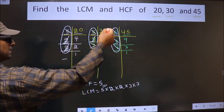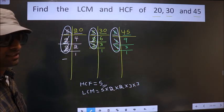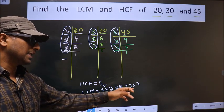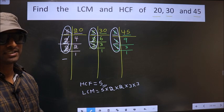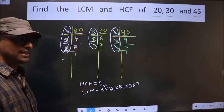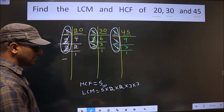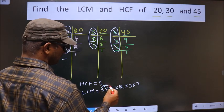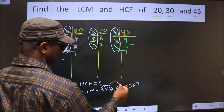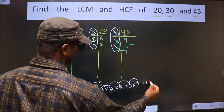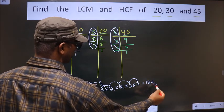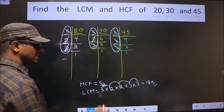Now each number has been cut. Therefore, you multiply these numbers. Whatever number you get, that is your LCM. So let us multiply. That is 5 into 2, 10, 10 into 2, 20, 20 into 3, 60, 60 into 3, 180. So this is our LCM and this is our HCF.